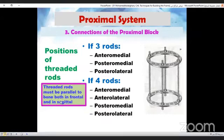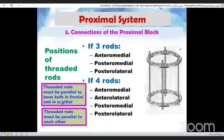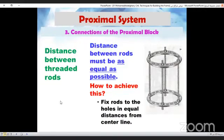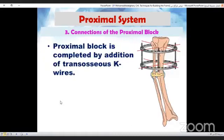Threaded rods must be parallel to the bone both in frontal and sagittal, and must be parallel to each other. The distance between the rods must be as equal as possible. To achieve this, the rods must be fixed to holes in equal distances from the center line. The proximal block is finally completed by addition of transosseous K wires.